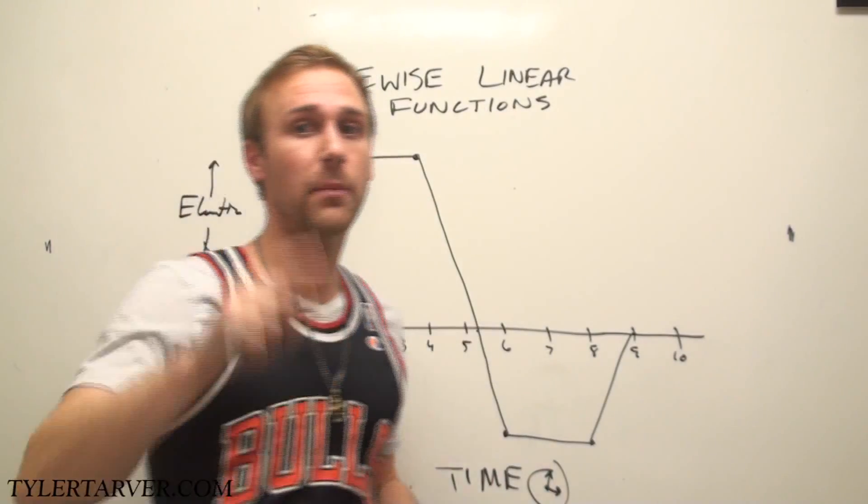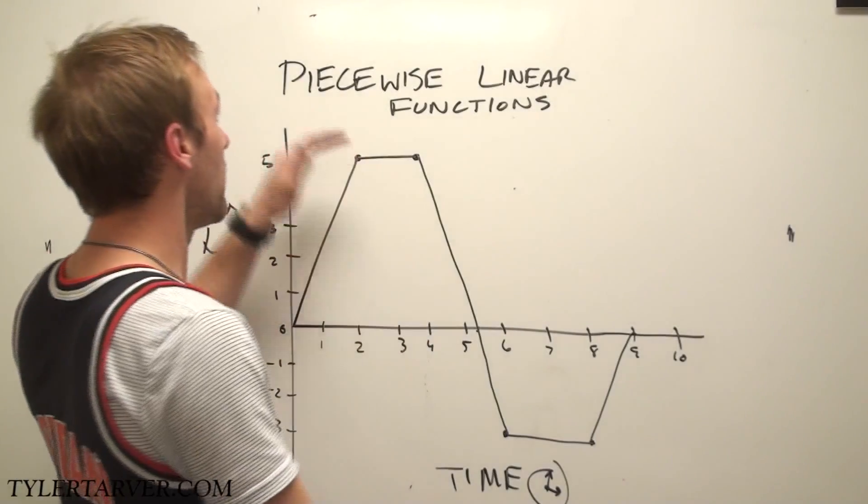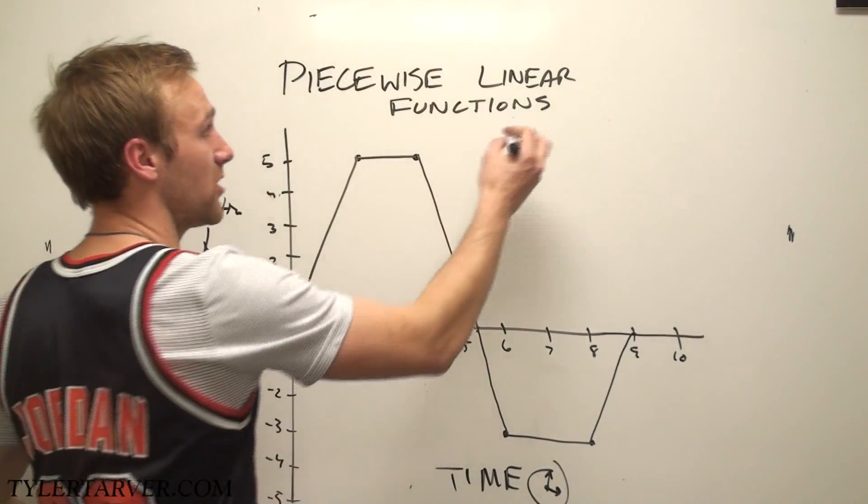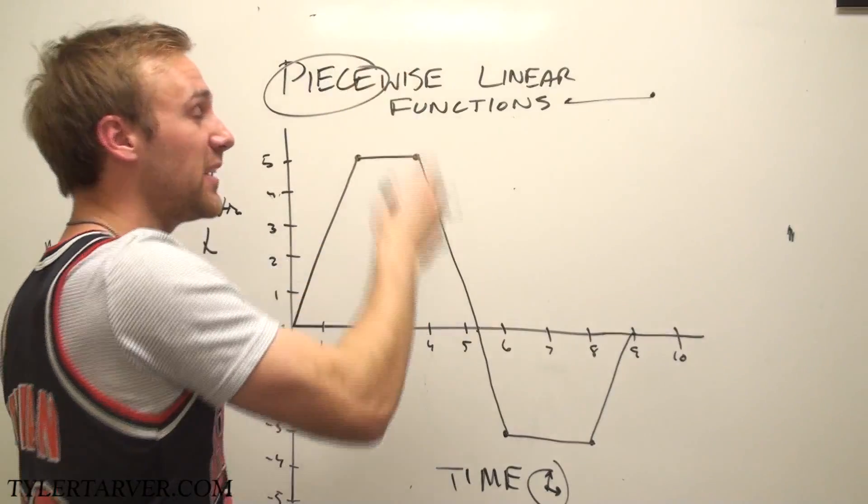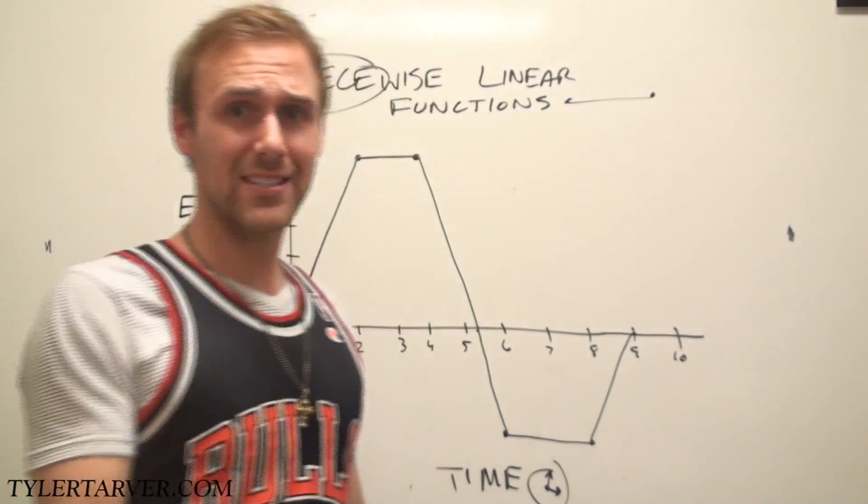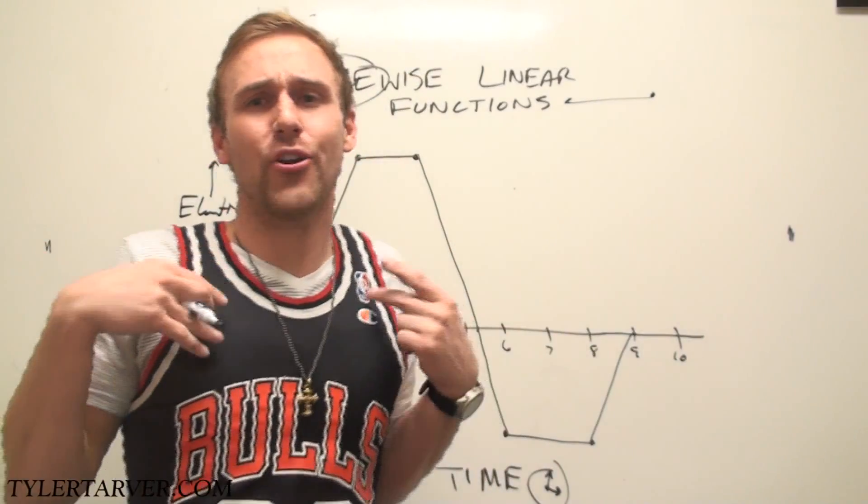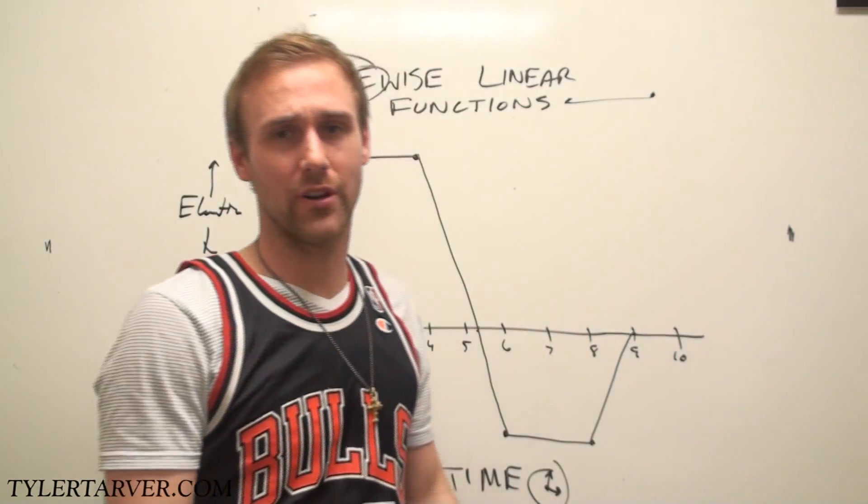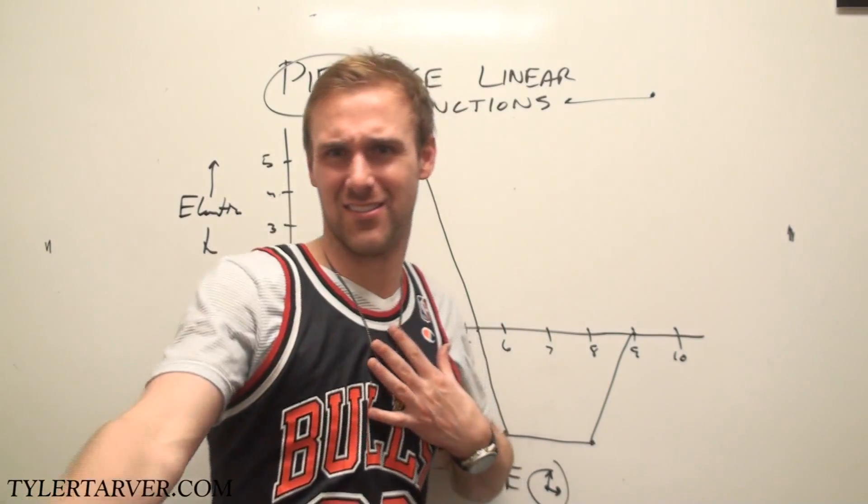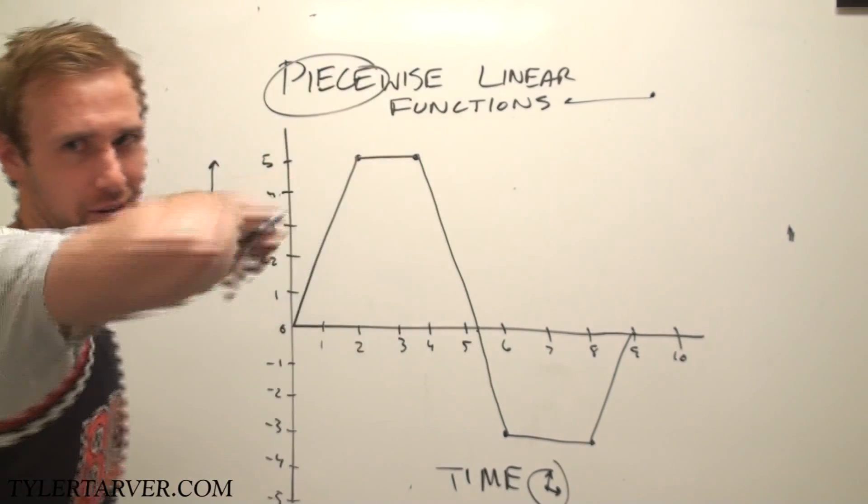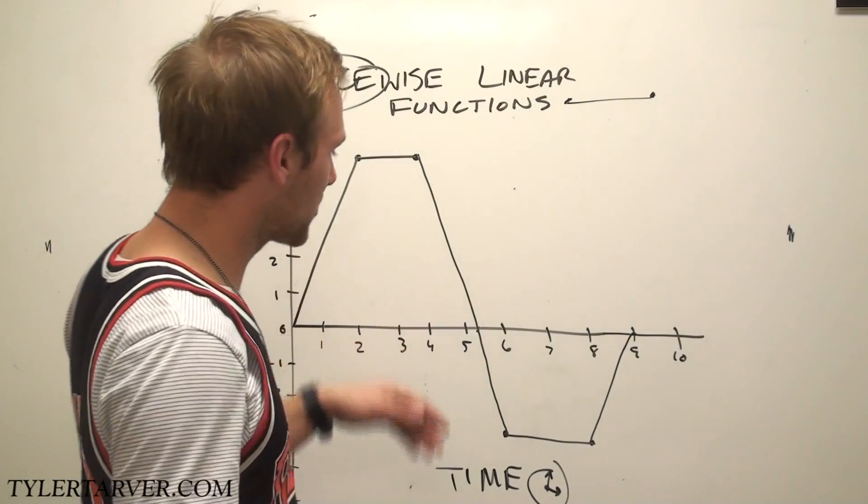What we're going to do is we're going to make up a story that fits this graph. This piecewise linear function. In review, piecewise linear function. A linear function is a straight line on a graph. Piecewise means pieces of lines on our graph. I'm wearing a strapped v-neck under a Bulls jersey pretending to be Michael Jordan and teaching math. I care about you. And I care about learning. So, let's make a story.